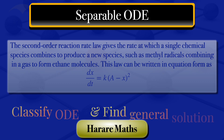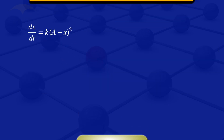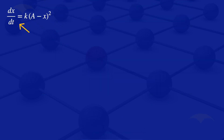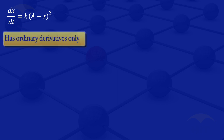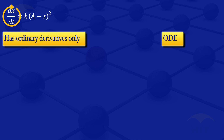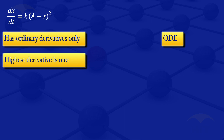Starting by classifying the ODE: looking at the left-hand side of the equation, we have the derivative of x with respect to t, which is an ordinary derivative. So this is an ordinary differential equation — an ODE. The highest derivative present is the first derivative of x with respect to t, so this is a first-order ODE.